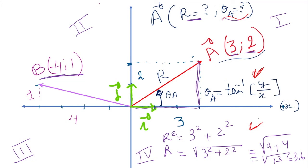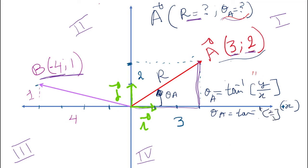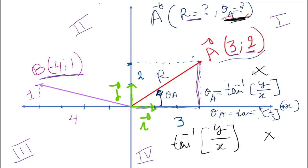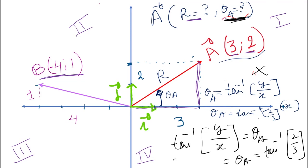The y of my vector A is 2 and x is 3, so theta_A will be just the arc tangent of 2 over 3. If we are in the first or fourth quadrant, we just use the arc tangent of y component over x component. The arc tangent of 2 over 3 gives us 33.69, or we can just put 33.7 degrees. We need the magnitude and the direction to x positive.